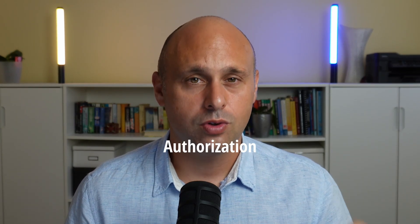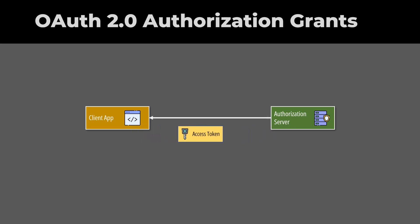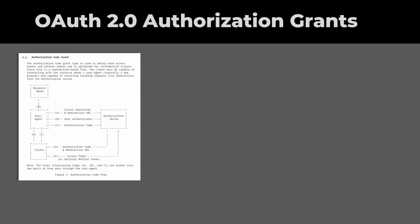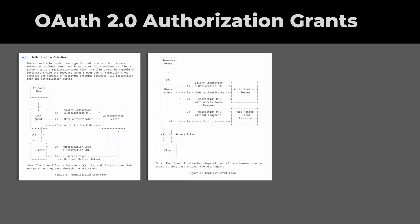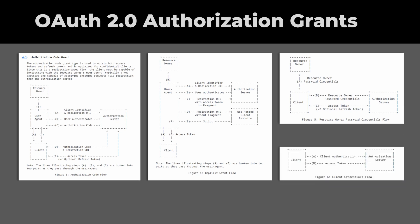The answer to these questions is given by the authorization grant types. An authorization grant represents a credential that authorizes the client application to obtain an access token. In simpler words, there are different flows a client application can leverage to obtain a token. The original standard defined four authorization grant types: authorization code, implicit, resource owner password credentials, and client credentials.